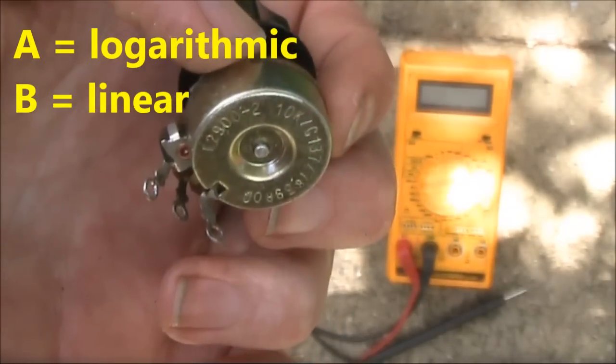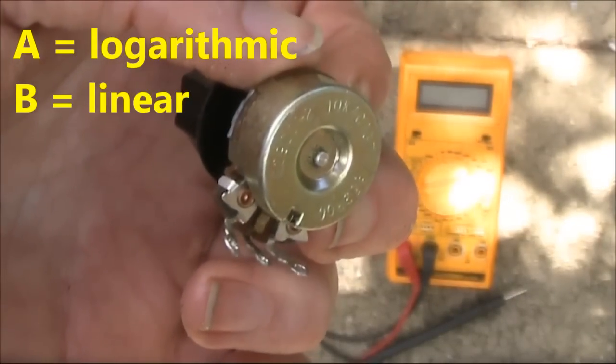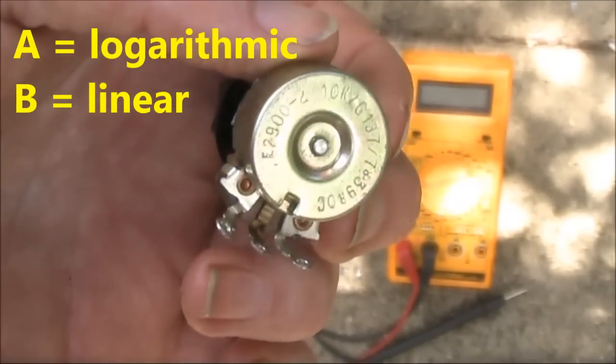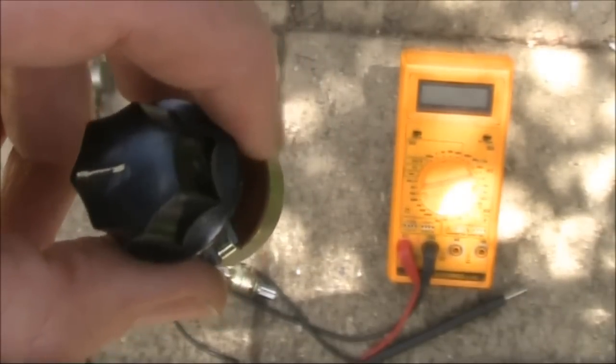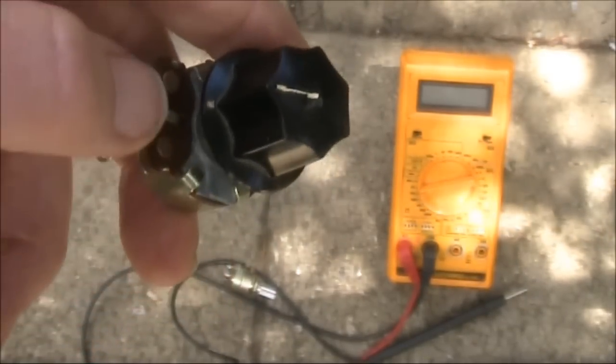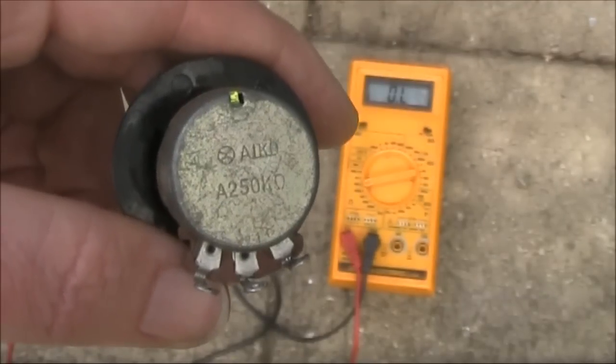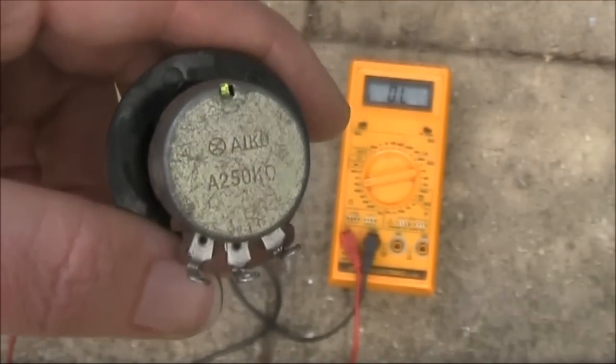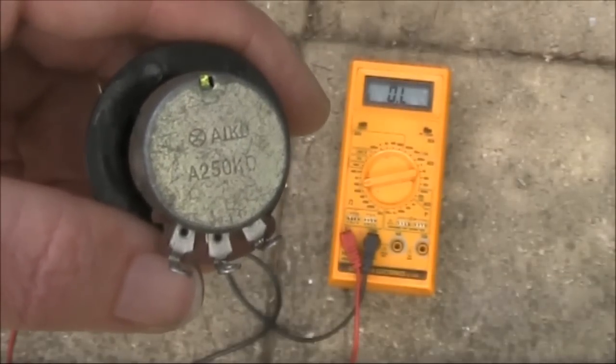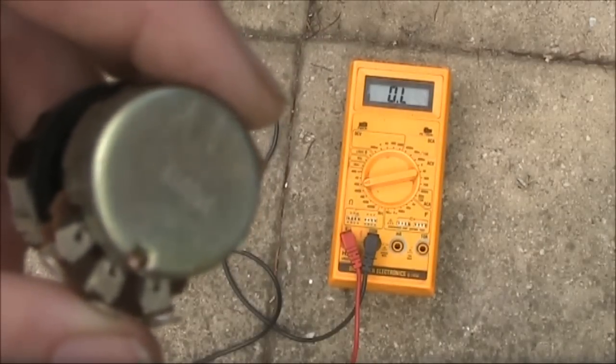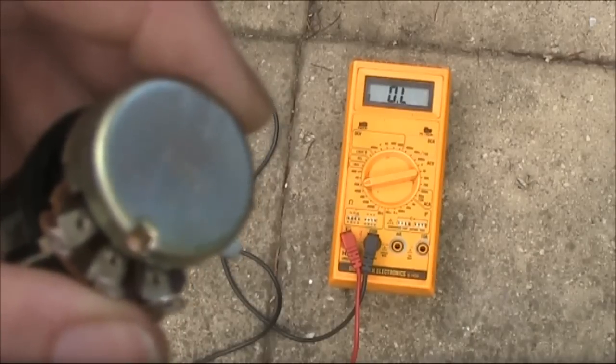You can often tell whether a potentiometer is linear or logarithmic by looking for a lettered code on the back near where the value is printed. Other places where the value may be printed are on the front, just up here, down here near the terminals, or around the side. This one is 250k, and the letter A means it's an A taper or logarithmic, such as you'd have in a volume control. This one says B 100k. The B means it should be linear, like the straight line shown on the graph.